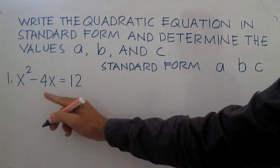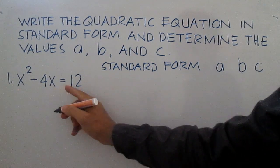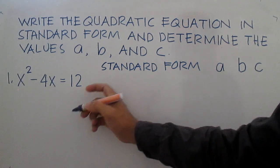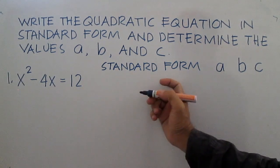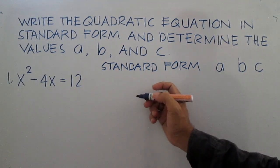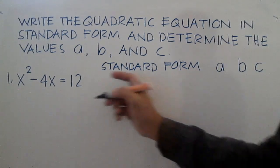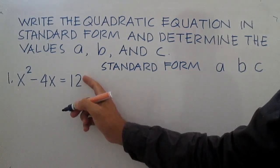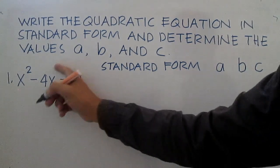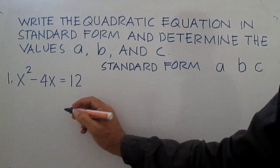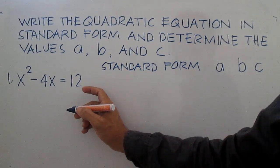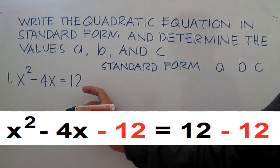Number 1: x squared minus 4x equals 12. This is not in standard form, so we're going to write it in the form ax squared plus bx plus c. Just transfer 12 to the left side of the equation — positive becomes negative.